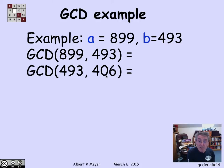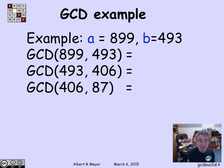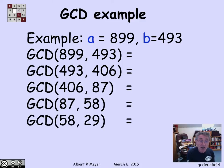Now I can divide 493 by 406. I get a quotient of 0 and a remainder of 87. So 406 and 87 have the same GCD. Dividing 406 by 87, I get that 87 and 58 have the same GCD. Dividing 87 by 58, I get that 58 and 29 have the same GCD. And now I win.